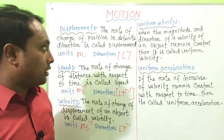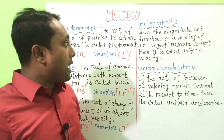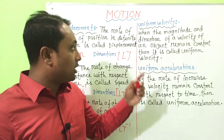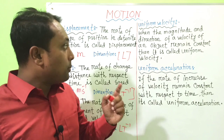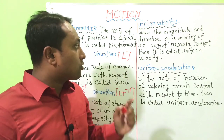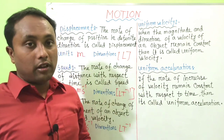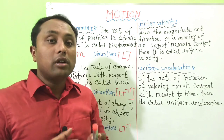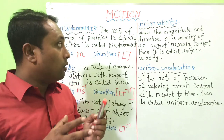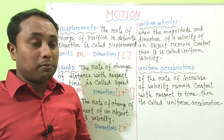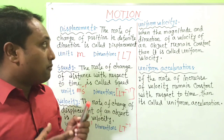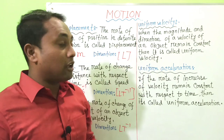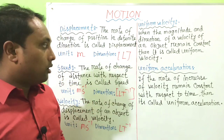The next definition is Uniform Velocity. When the magnitude and direction of the velocity of an object remain constant, it is called uniform velocity. According to this definition, both magnitude and direction do not change.